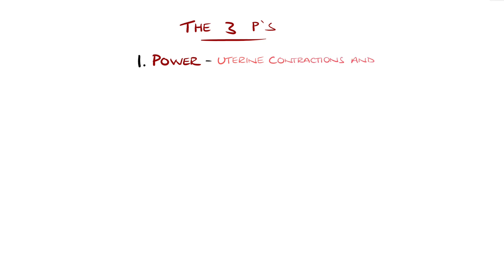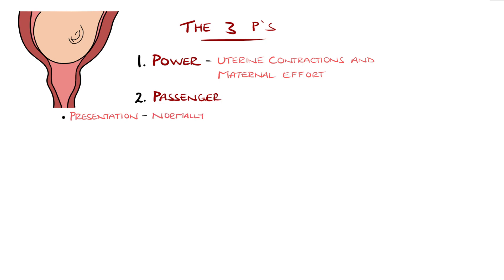Power: this is the uterine contraction and maternal efforts. Second is passenger, which refers to the fetus and related factors, such as the presentation, which refers to which part of the fetus is leading the way, which is normally the head, termed cephalic. But if it is the feet or legs, then this is a breech presentation. In this case, manoeuvres like external cephalic version, where the fetus is turned, can be done, but many go on to have a caesarean section.